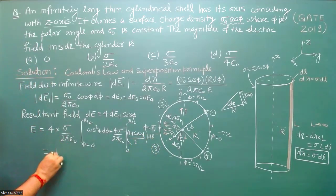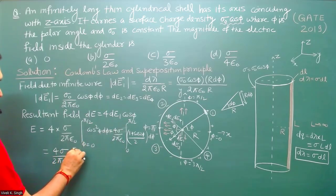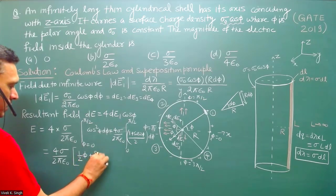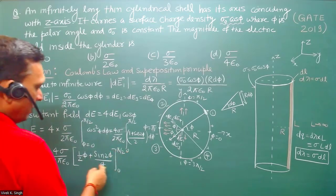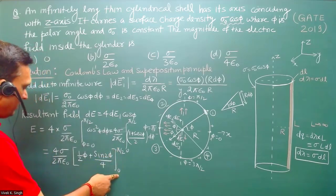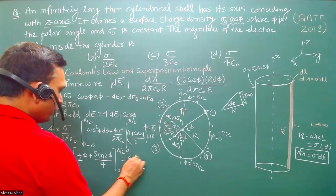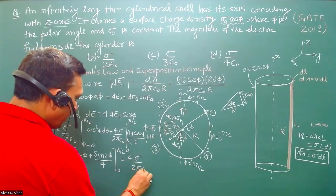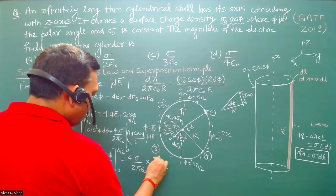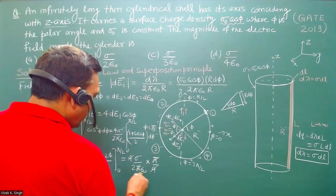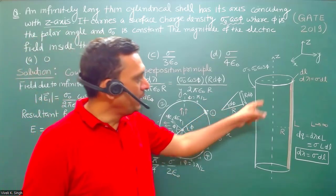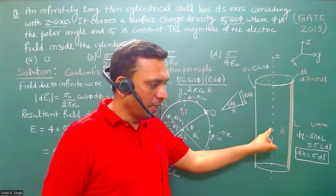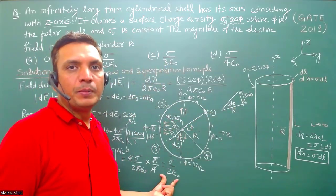Evaluating the integral: integrating gives (1/2)φ + sin(2φ)/4 evaluated from 0 to π/2. Since sin(π) = 0 and sin(0) = 0, the sine terms vanish, leaving π/4. So the resultant field is 4·(σ₀ / 2πε₀)·(π/4). The 4 and π cancel, giving the magnitude of the electric field inside the cylindrical shell as σ₀ / (2ε₀).